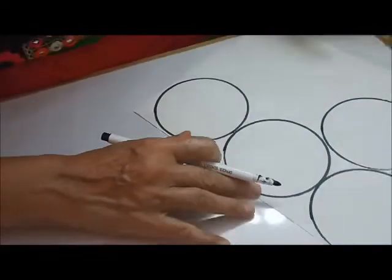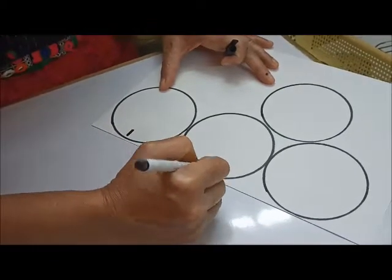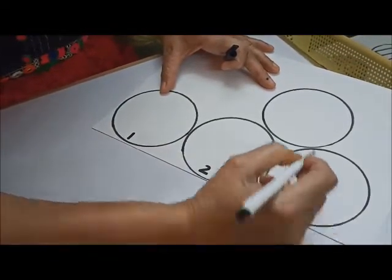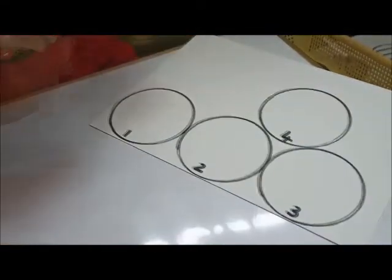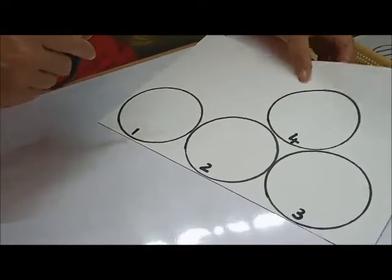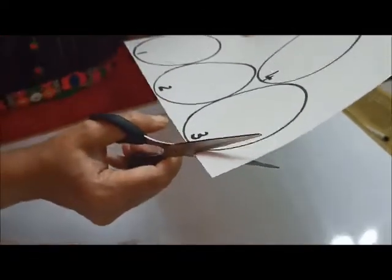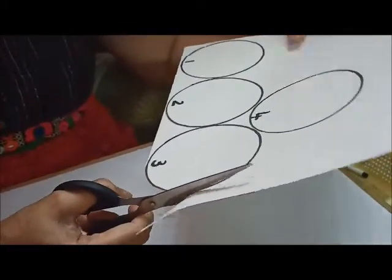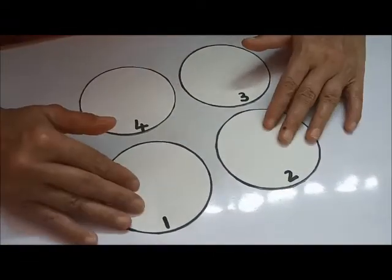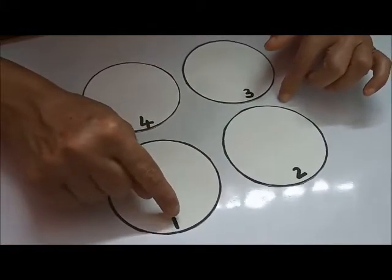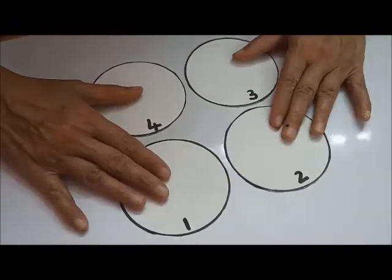Now, we are going to write the numbers. One, two, three and four. Now, mama or papa are going to cut the circles for you like this. Alright children. We now have our four circles and we have written the numbers one, two, three and four. Now, what must you do?